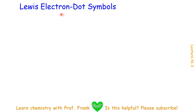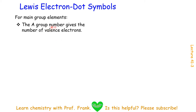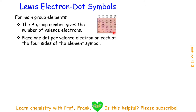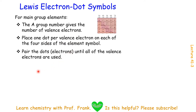Let's take a look at Lewis electron dot symbols. For main group elements, the group number is the same as the number of valence electrons. For group 3A elements, they should have three valence electrons. When writing the Lewis electron dot symbol, you need to place one dot per valence electron on each of the four sides of the element symbol, and then pair the electrons if necessary, until all of the valence electrons are assigned.